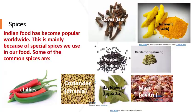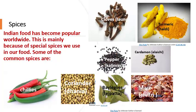Indian food has become popular worldwide, mainly because of the special spices we use. Some of the common spices are chilies, coriander, cloves, pepper, bay leaves, turmeric, cardamom, and mace. All these spices make Indian food very popular and also very tasty.